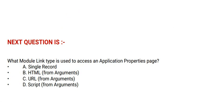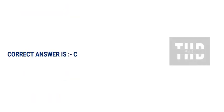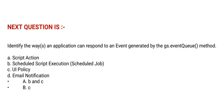Next question: What module link type is used to access an application properties page? Option A: Single record. Option B: HTML from argument. Option C: URL from argument. Option D: Script from argument. The correct answer is Option C.